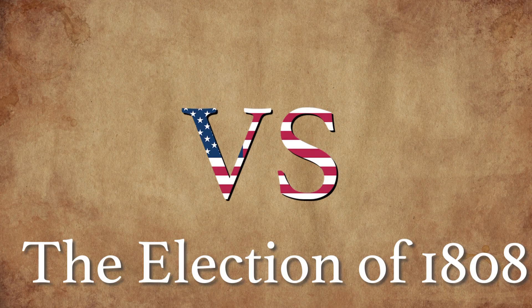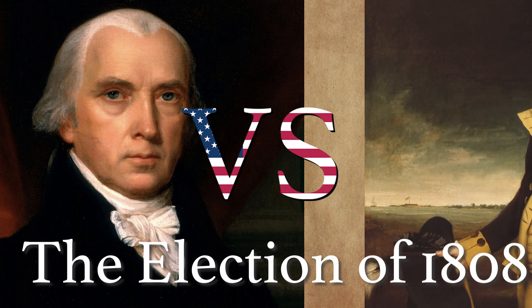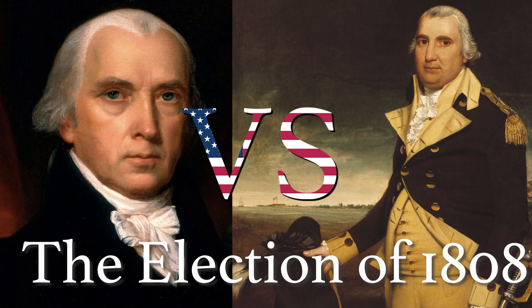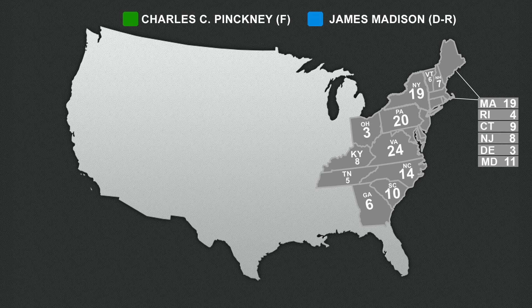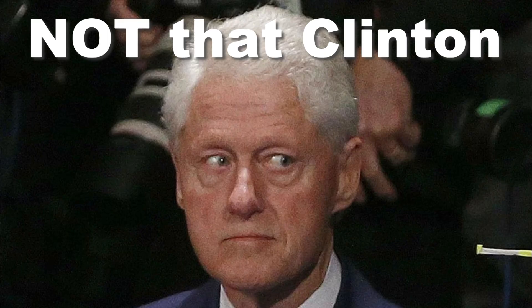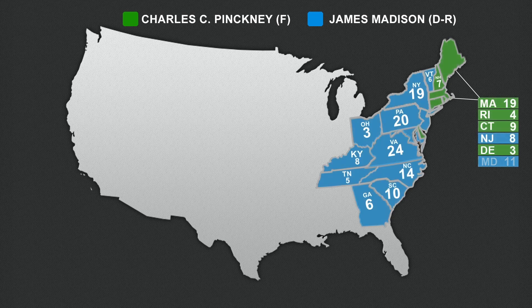The election of 1808: James Madison vs. Charles Pinckney. Madison had served as Undersecretary of State under Jefferson, and Pinckney had just lost the previous election, showing how far the Federalist Party had fallen. Sitting Vice President George Clinton, who had served under Jefferson, also ran as a candidate and garnered six electoral votes from a wing of the Democratic-Republican Party that disapproved of Madison. This election was never really in doubt, and the Democratic-Republicans easily carried the day.